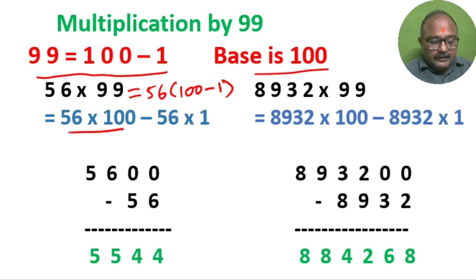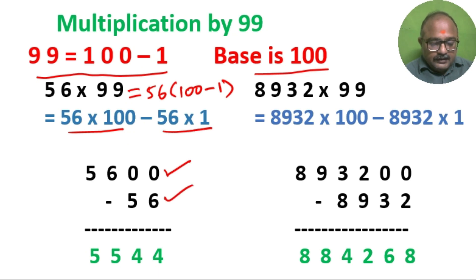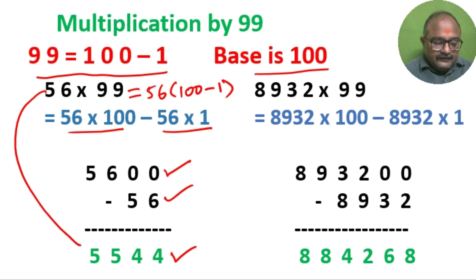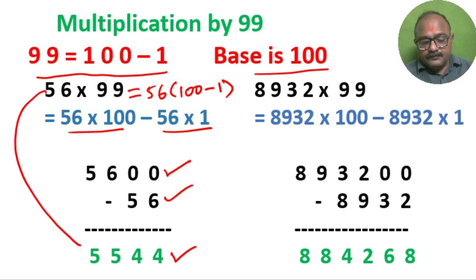56 into 100 is 5600, and 56 into 1 is 56. If you subtract, the answer is 5544. So 56 into 99 is equal to 5544.